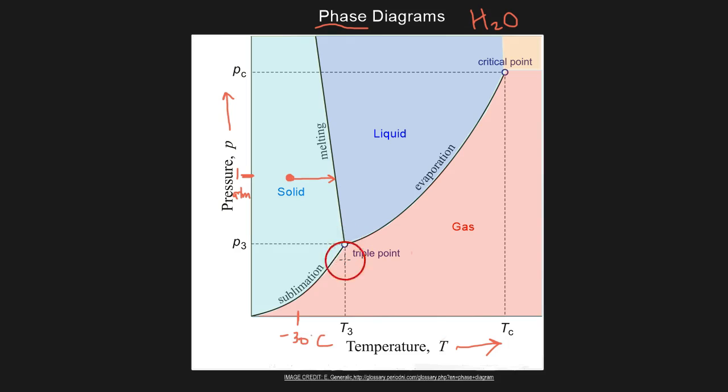All right, so that's what all these lines represent. So to kind of recap it here, we have fields. We have these two-dimensional fields, which represent one phase. And then we have this one-dimensional line, which represents two phases.